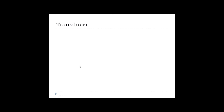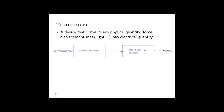A transducer is a device that converts any physical quantity into an electrical quantity. A transducer includes a sensing element and a transduction element. The sensing element converts one form of physical quantity into another form of physical quantity. The transduction element then converts this physical quantity into electrical output.